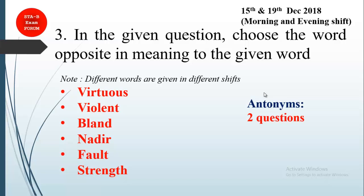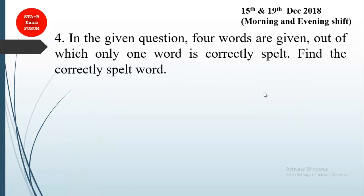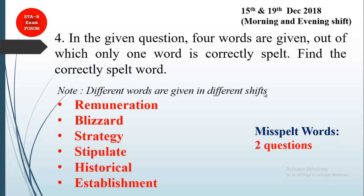Coming to the next question: four words are given out of which only one word is correctly spelled — find the correctly spelled word. This comes under the category of misspelled words, and again two questions can be asked in this section. The misspelled word questions asked in that exam include: remuneration, blizzard, strategies, stipulate, historical, and establishment. You have to choose the correctly spelled word from four options.